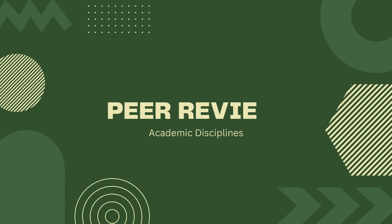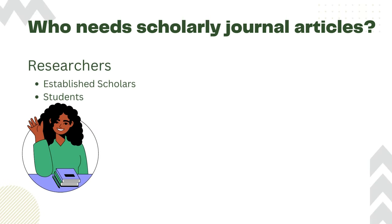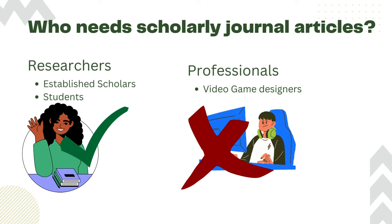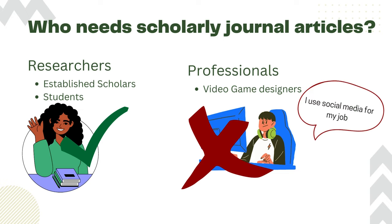Before we discuss peer review in the context of academic disciplines, let's discuss who needs scholarly journal articles. These people are researchers, which include students and established scholars in a field. This does not typically include professionals who are working in a field, for example a video game designer. Professionals usually rely on different types of information to stay current and informed.